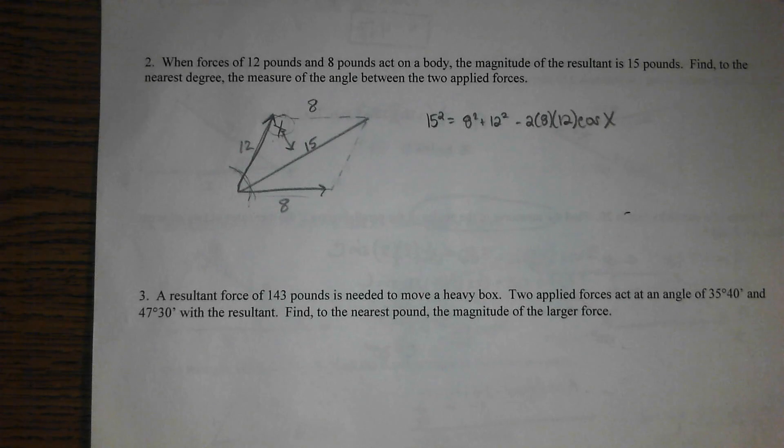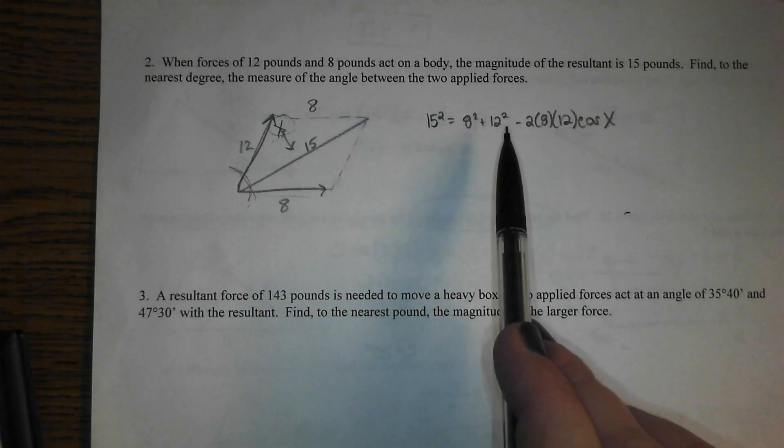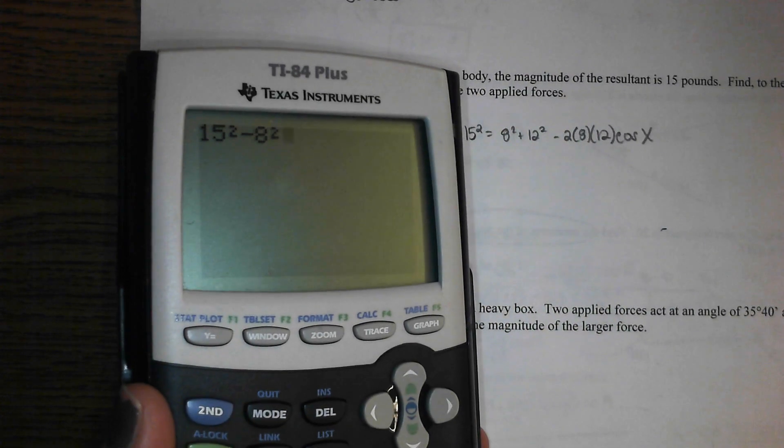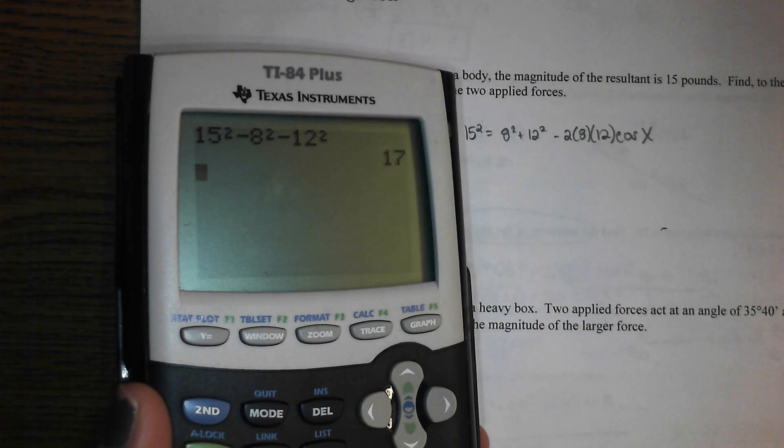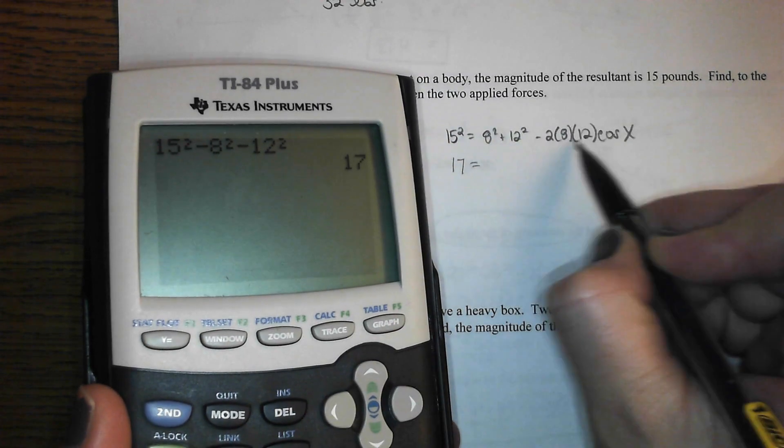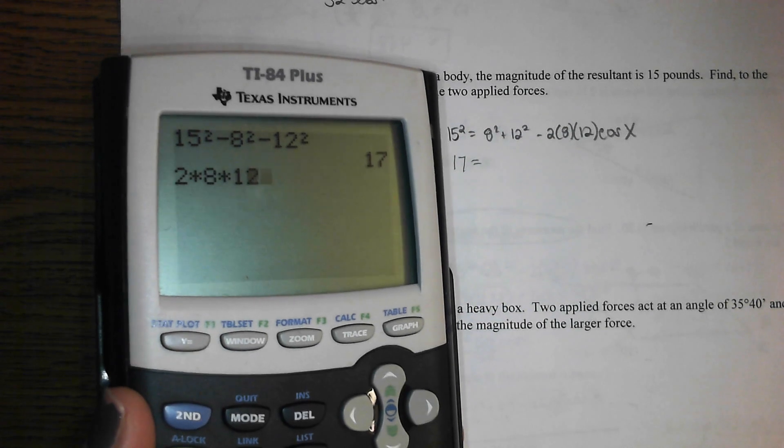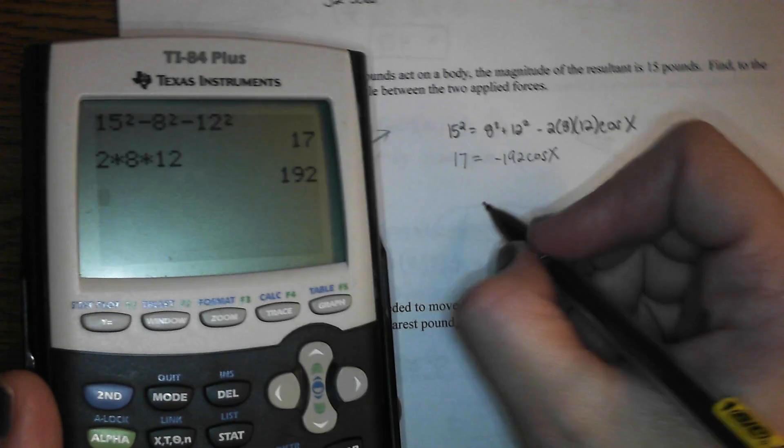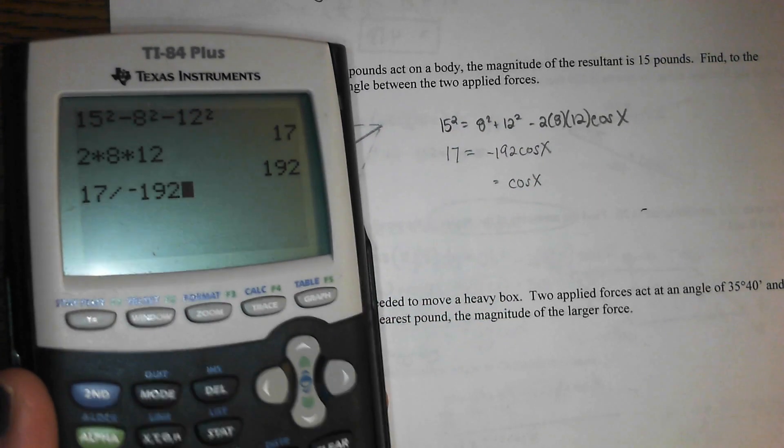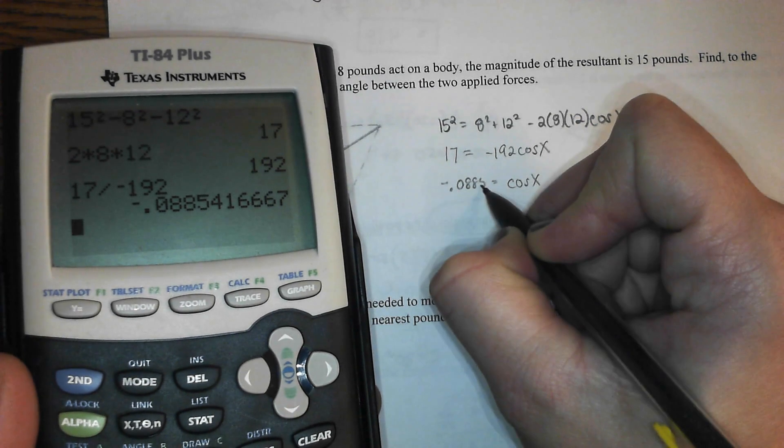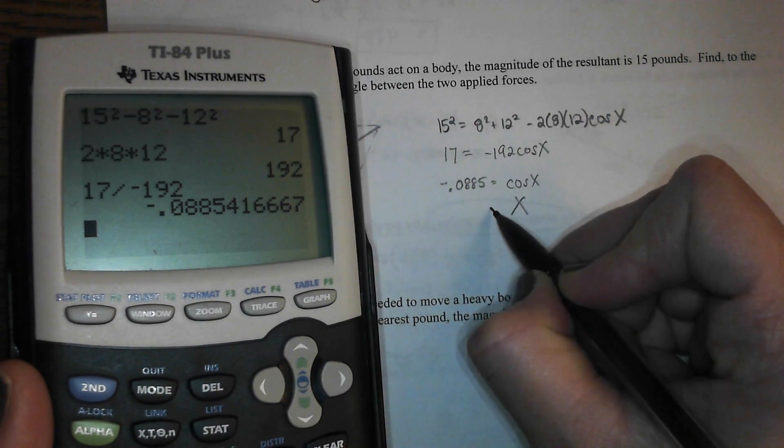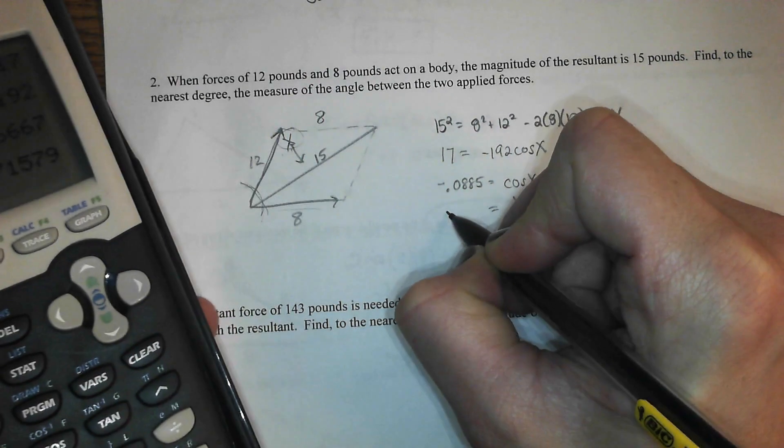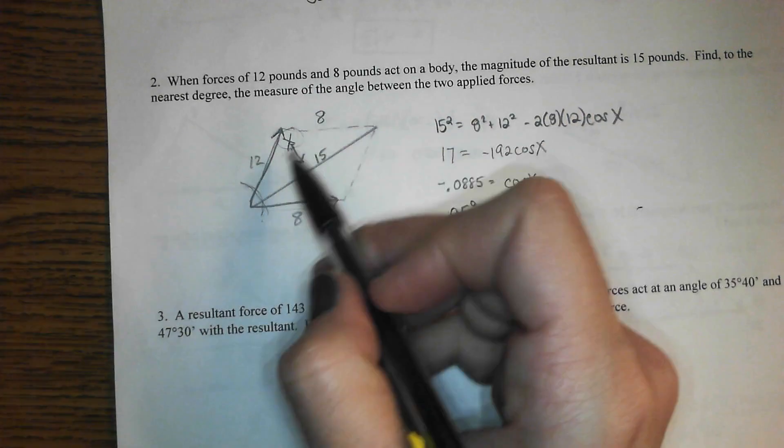So again, kind of like the way we just solved that one on our homework, we're going to subtract the 8 squared over and subtract the 12 squared over. So 15 squared minus 8 squared minus 12 squared gives you 17 on the left. Your coefficient on the right is 2 times 8 times 12 and it's negative. What is it? Negative 192 cosine x. We divide over the negative 192 and it's negative 0.885-ish, and we do inverse cosine of that number. So it's a 95-ish. Does it say the nearest angle? Yeah. So it's a 95. This one is a 95 degree angle.